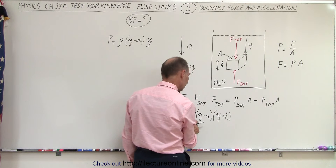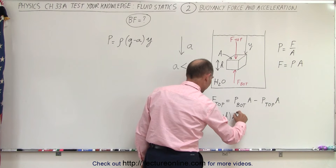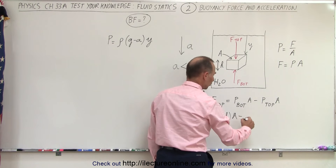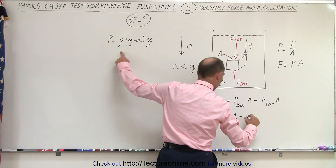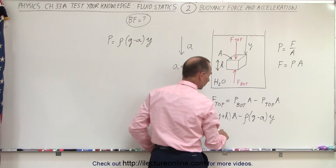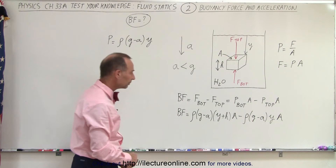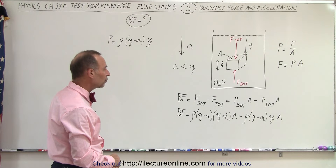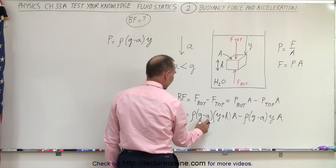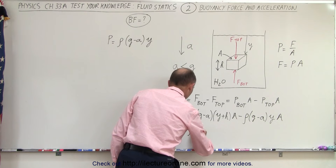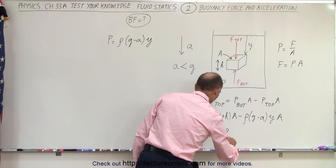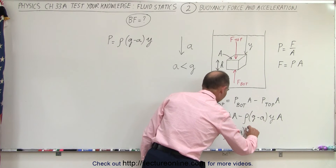The buoyancy force equals the pressure at the bottom — which is ρ(g − a)(y + h) — times area, minus the pressure at the top — which is ρ(g − a)(y) — times area. The depth at the bottom is y + h, since the bottom is H further down than the top of the object.